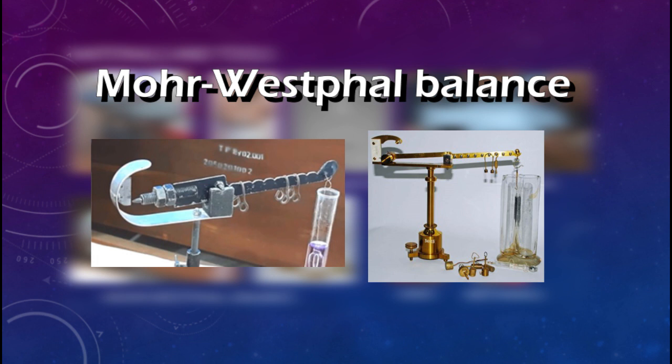Once you have the object on the right, then the torsion is going to be positive on the right and that's going to be in balance conditions. We're using the Mohr-Westphal balance to determine the density of the object here.